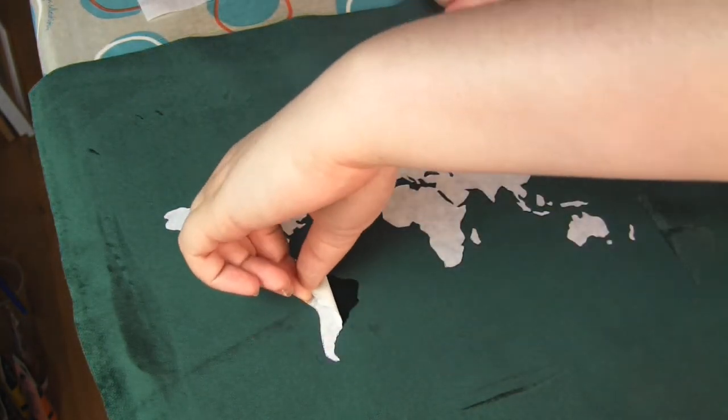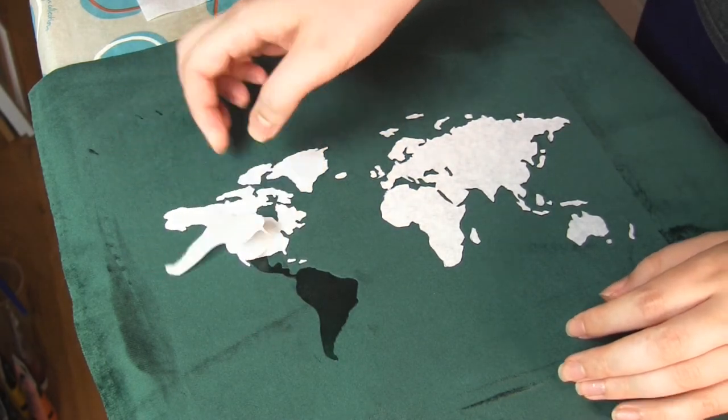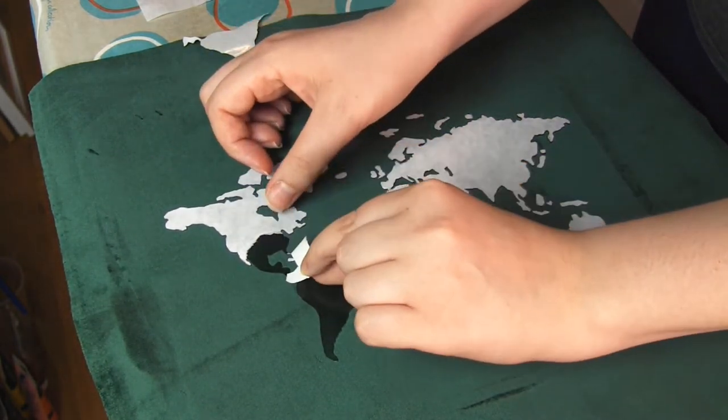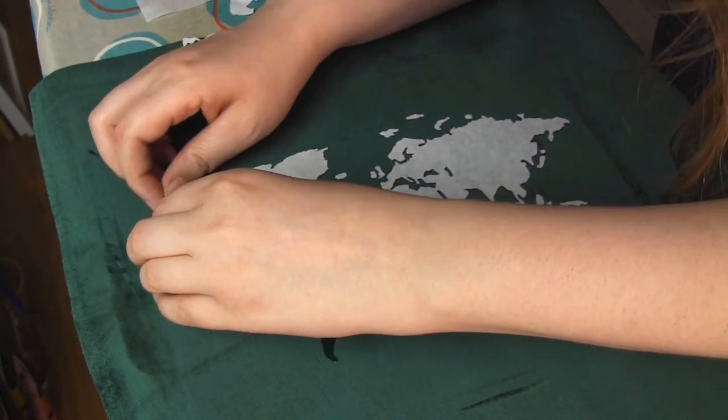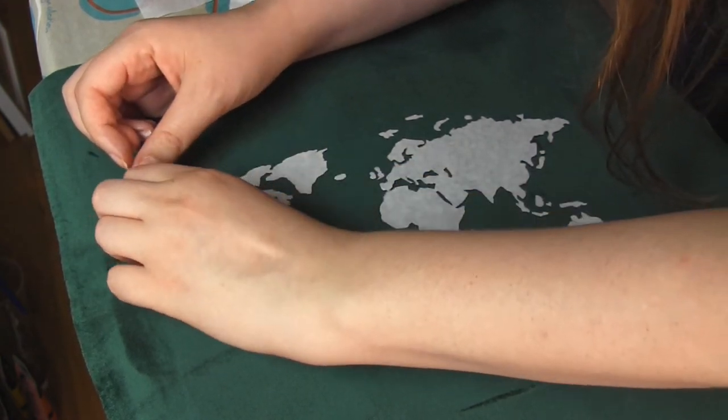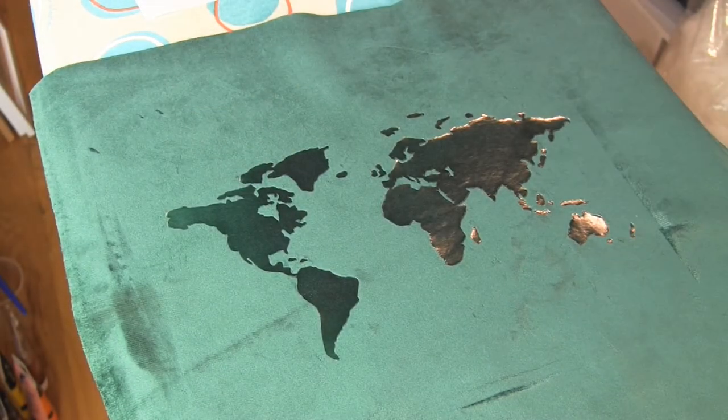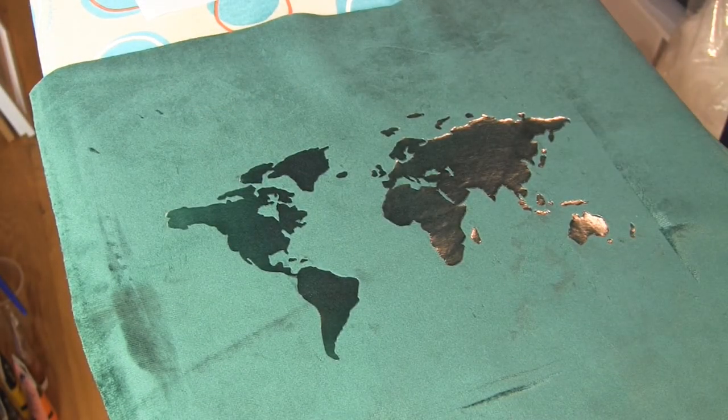Then make sure to leave the fabric to cool completely. Then remove the paper backing on each of the map shapes. If the adhesive hasn't properly transferred, you can always put the parchment paper back down and iron it some more. This should leave you with just a shiny adhesive on the fabric, as you can see here.